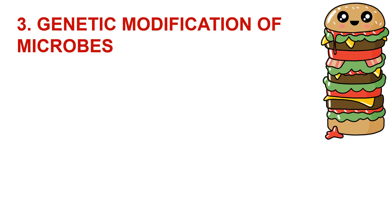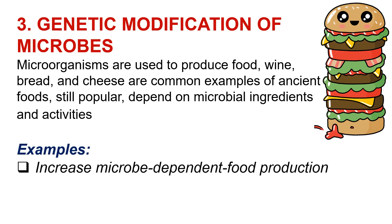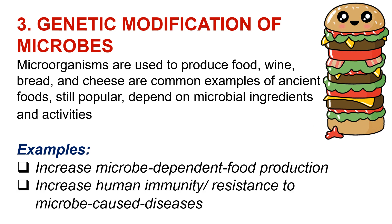Number three is the genetic modification of microbes. Microorganisms play significant roles in food production, serving as primary and secondary roles in food fermentation and food spoilage, and they can produce enzymes or other metabolites used in food production and processing. Humans have used genetically modified microorganisms for centuries to produce food — food, wine, bread, and cheese are common examples of ancient foods still popular today that depend on microbial ingredients and activities. Examples include increase in microbe-dependent food production and increase in human immunity or resistance to microbe-caused diseases.